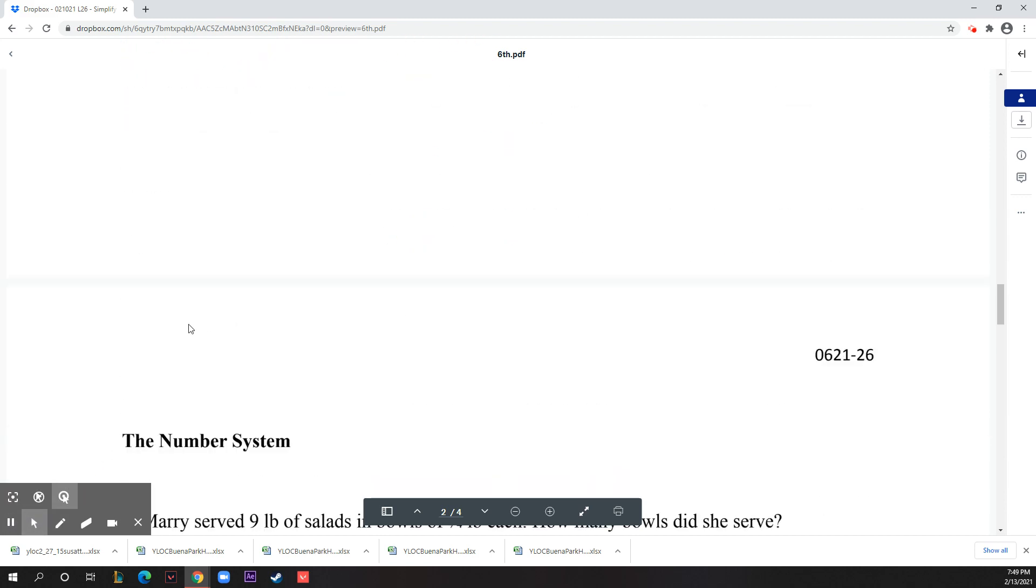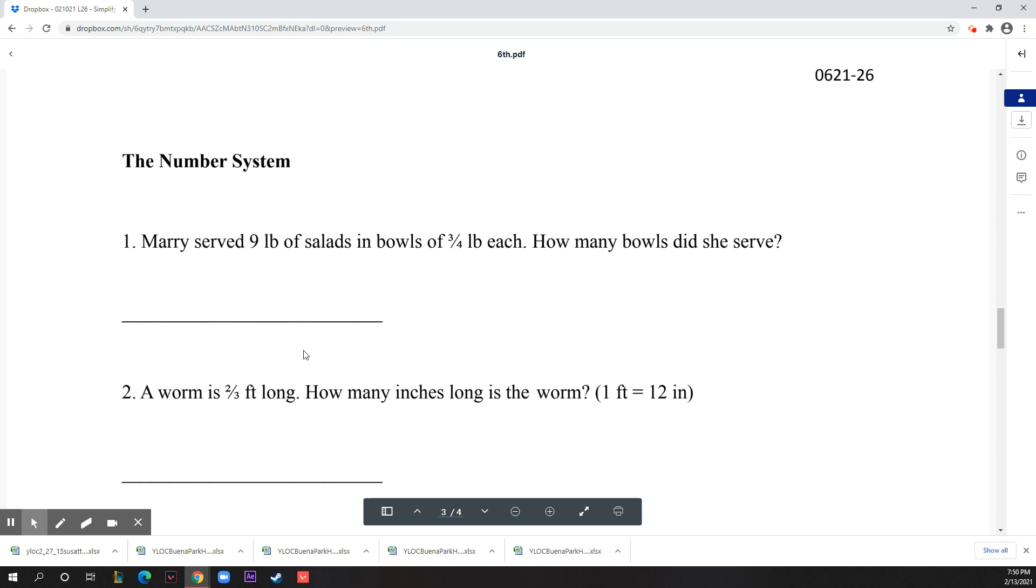On to the next section for real this time - the number system. Mary served nine pounds of salad in bowls of three quarters pound each. How many bowls did she serve? If each bowl is three fourths of a pound and she served nine pounds in total, you need to see what nine divided by three fourths is. Nine over one divided by three fourths, which is the same as nine over one times four over three. You reduce like this - multiply across, it's 12. So Mary served 12 bowls of salad.